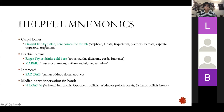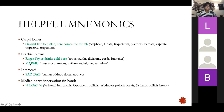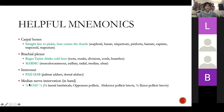Helpful mnemonics: carpal bones — 'straight line to pinky, here comes the thumb': scaphoid, lunate, triquetrum, pisiform, hamate, capitate, trapezoid, trapezium. Brachial plexus — 'Roger Taylor drinks cold beer': roots, trunks, divisions, cords, branches. Branches mnemonic — MARMU: musculocutaneous, axillary, radial, median, ulnar. Interossei — PAD DAB: palmar interossei adduct, dorsal interossei abduct. Median nerve innervation of the hand: LOAF — lateral two lumbricals, opponens pollicis, abductor pollicis brevis, and half of flexor pollicis brevis, covering the thenar eminence.